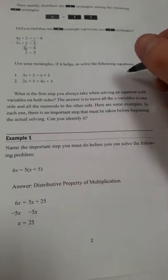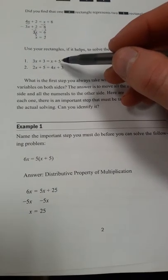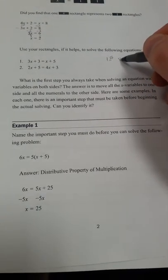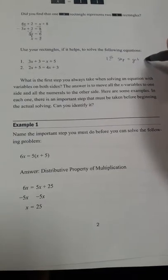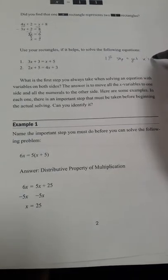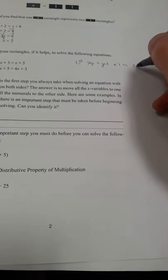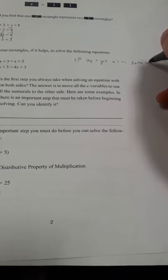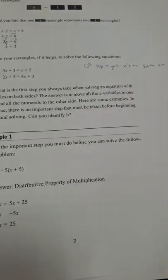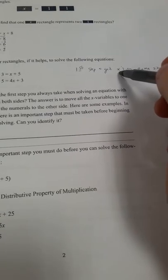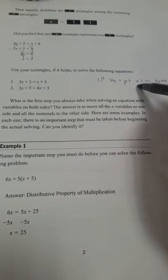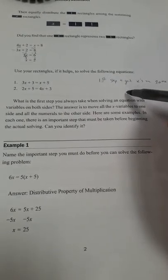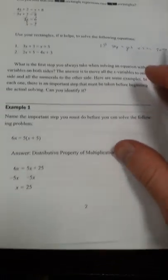So what is the first step when you see x's on both sides of an equation? The first step is to get the x's — or whatever variable it is, like y or c — on the same side. We want to get the letters we're solving for on the same side. Then the next step is to solve for x from that point.